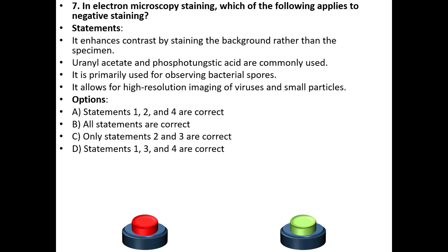Seventh question. In electron microscopy staining, which of the following applies to negative staining? Statements: It enhances contrast by staining the background rather than the specimen. Uranyl acetate and phosphotungstic acid are commonly used. It is primarily used for observing bacterial spores. It allows for high-resolution imaging of viruses and small particles.